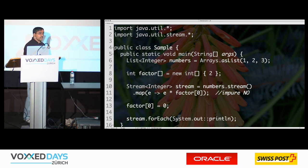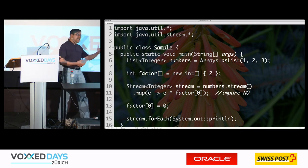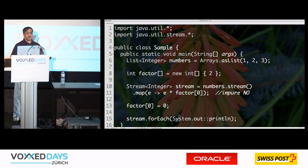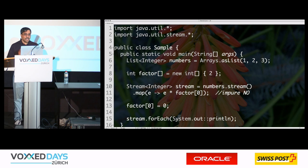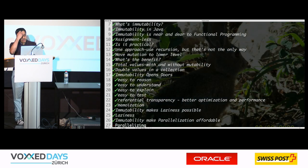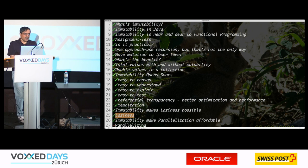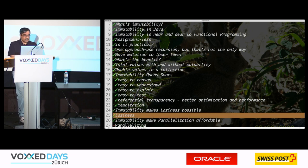Immutability is absolutely critical when it comes to laziness. Trying to use laziness without immutability is a disaster in the making. You cannot turn off laziness in this code — that's default behavior in languages like Java and others. So we have to abide by the rule of the land.